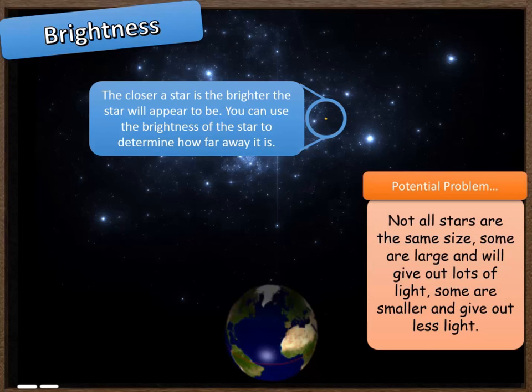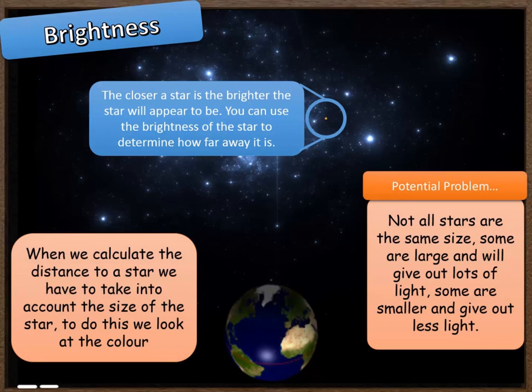However, there is a potential problem with this method. Not all stars in the sky are the same size. Some are larger and therefore they're going to give out lots of light, and some are slightly smaller so they give out less light. So this adds an element of uncertainty into the measurement of distance. We need to take into account the size of the star when we measure the distance using the brightness method. We can do that by looking at the colour of the star. That tells us roughly what size it's going to be, what temperature it is, and therefore how much light it's likely to be giving off. However, this is an estimate and an assumption, so therefore our result won't be as accurate as it could be.